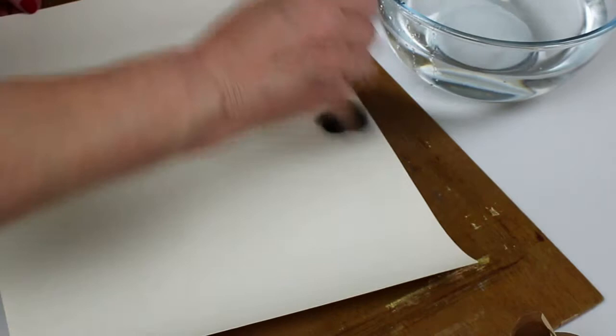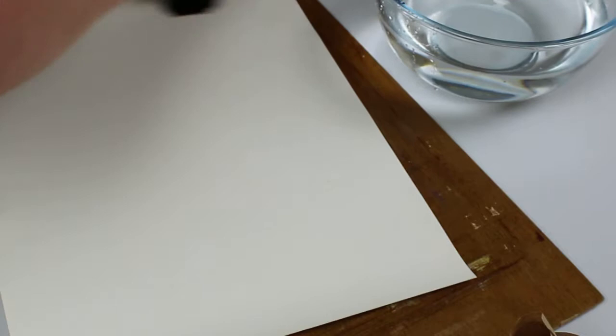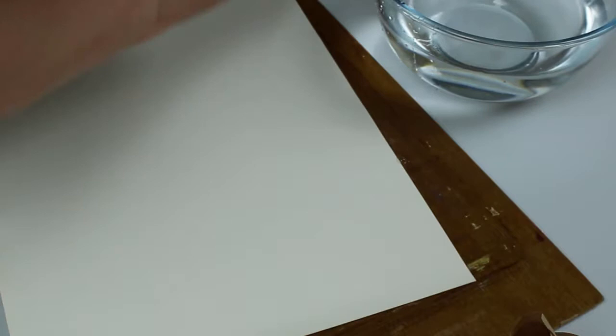dries out, the fibers obviously go back to what they were, but it goes into a tight drum on the board. So that when you paint onto it, you get less warping of your paper, especially if you're using a lot of water and you're doing a lot of wet-into-wet watercolor painting.